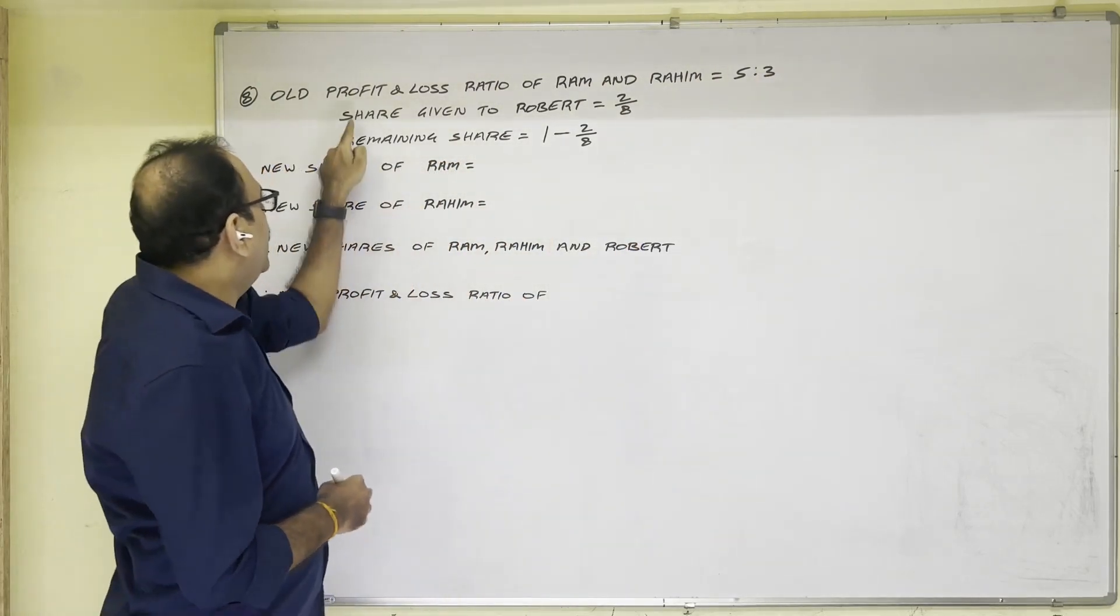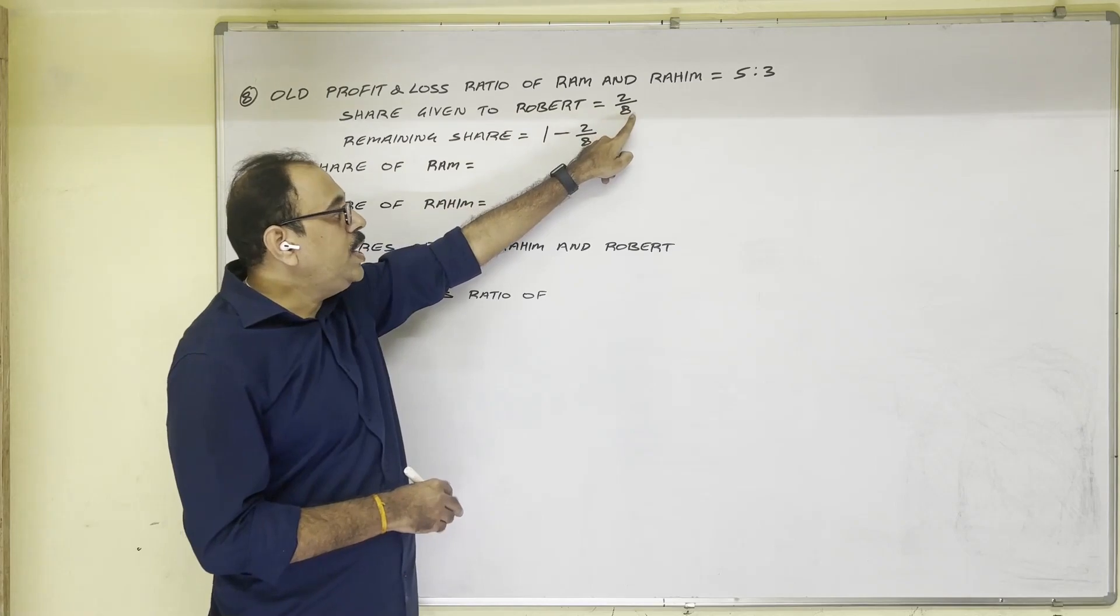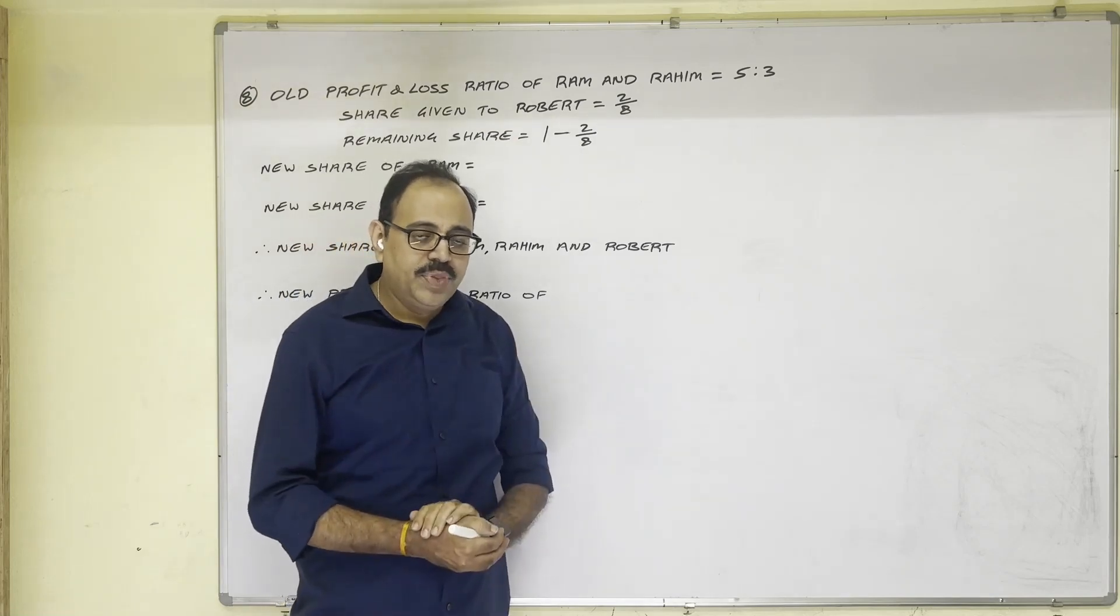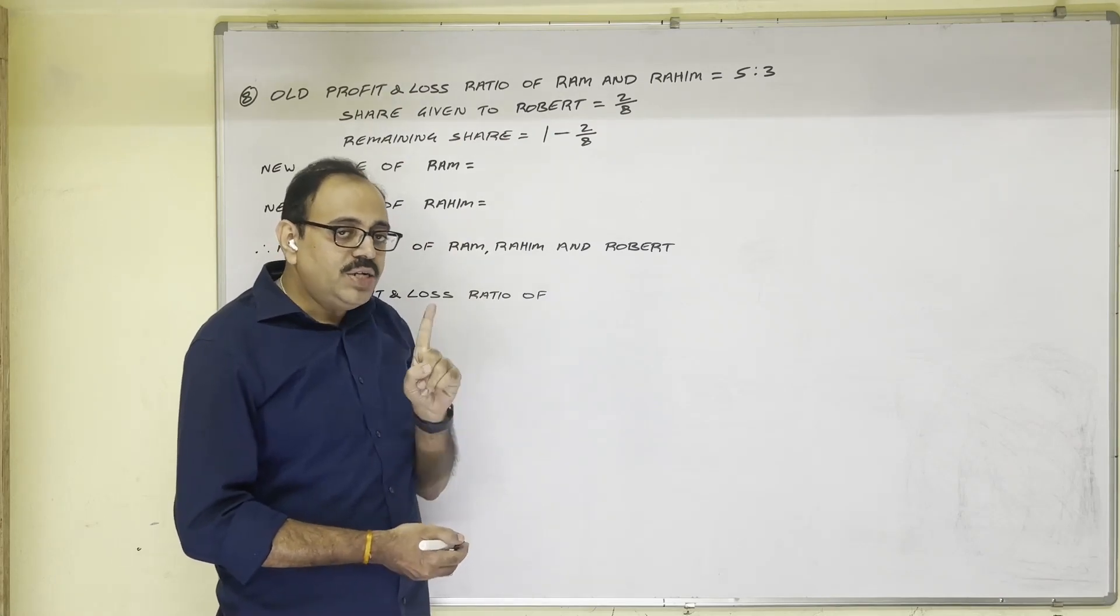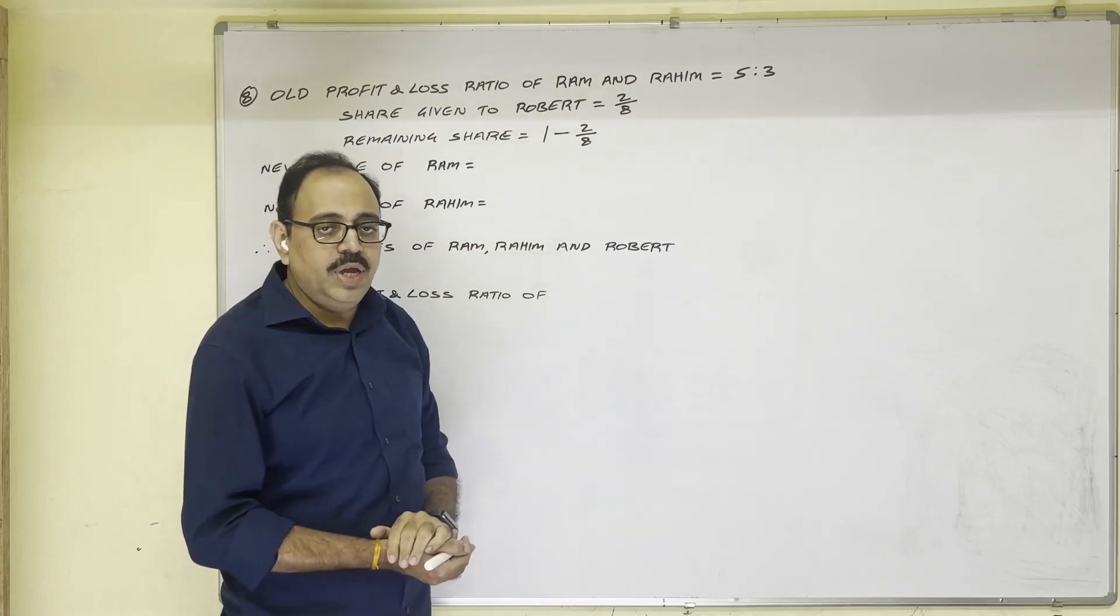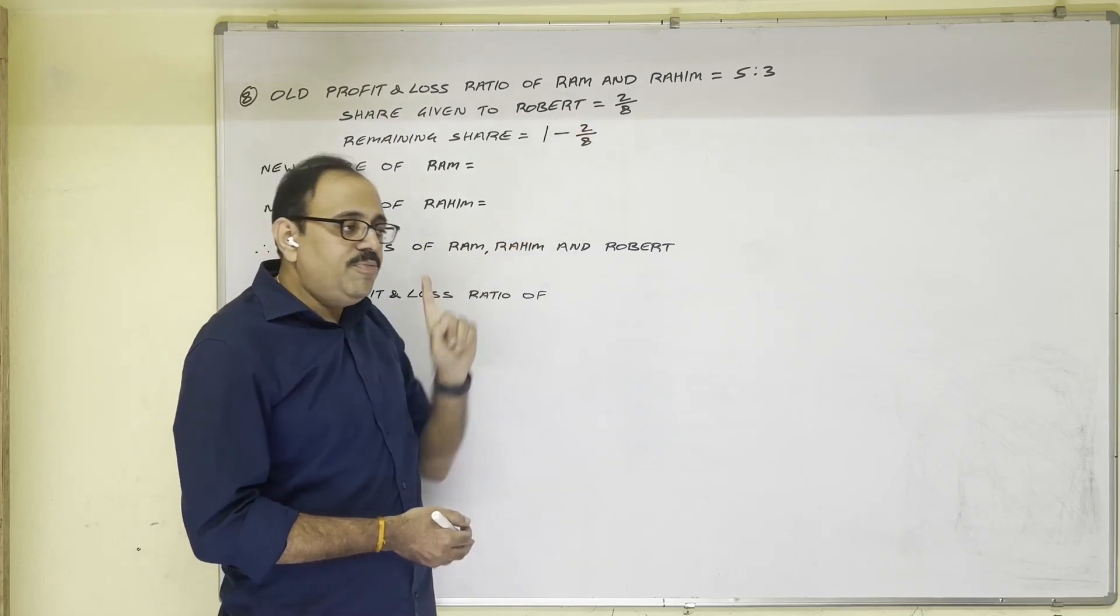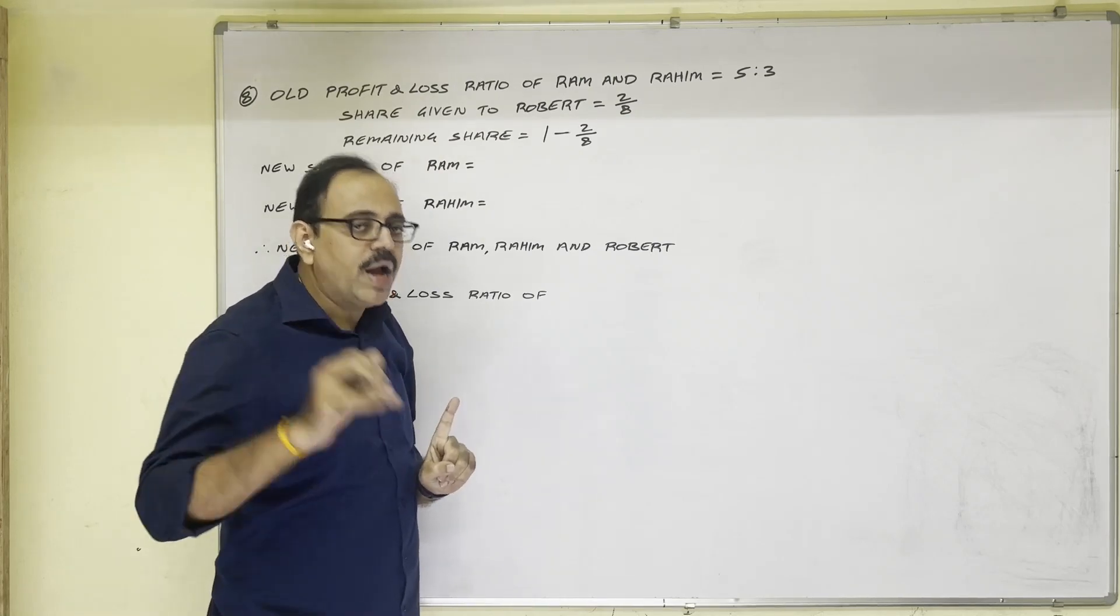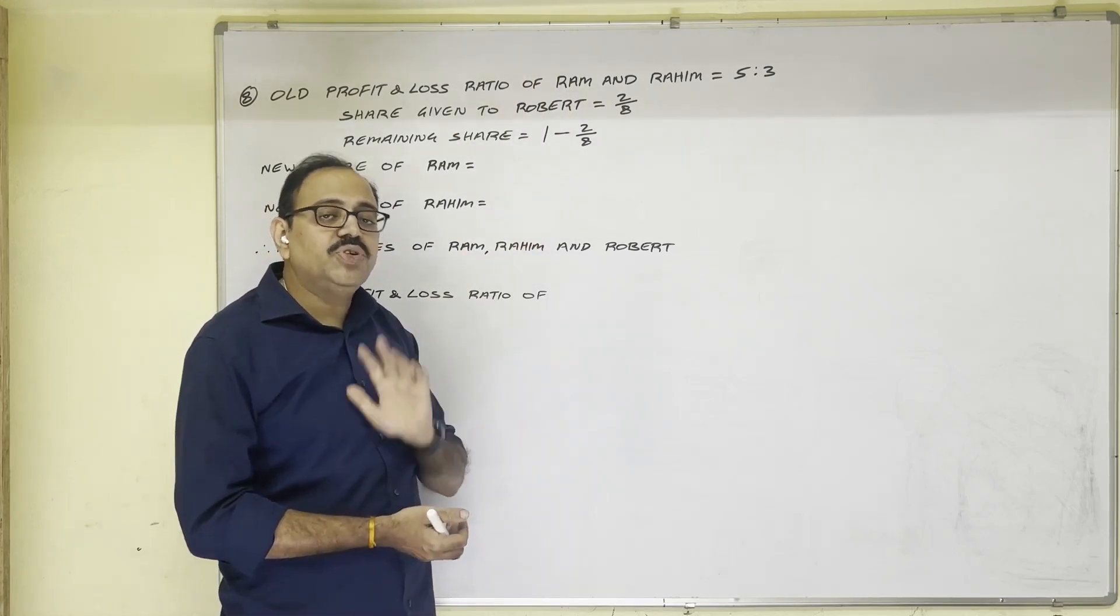And they have admitted Robert as a new partner by giving him 2/8th share in the profits. So in case of percentage total value is 100. In case of fractions total value is 1. So there is a 1 share before admission Ram and Rahim used to take in 5 to 3 ratio. When Robert is admitted as a new partner, from this one share old partners have given 2/8th share to new partner. Then remaining share old partners take, so that remaining share first we should calculate.